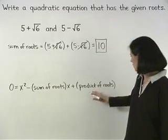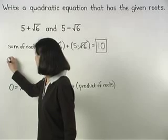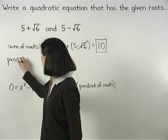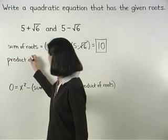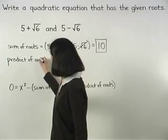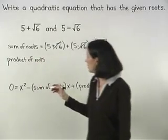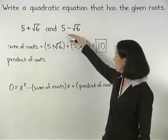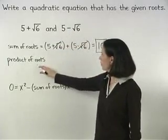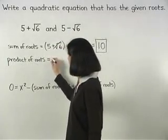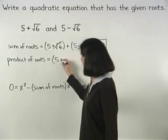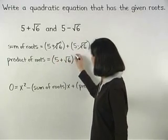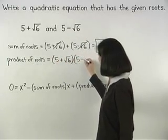To find the product of the roots, since the given roots are 5 plus root 6 and 5 minus root 6, the product of the roots is 5 plus root 6 times 5 minus root 6.